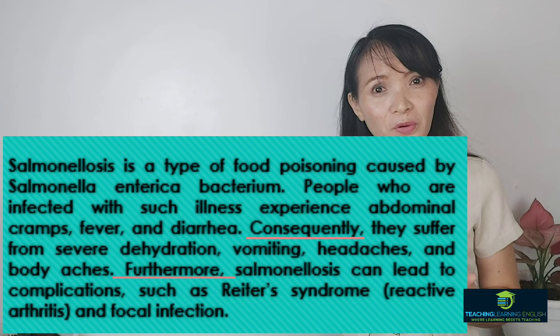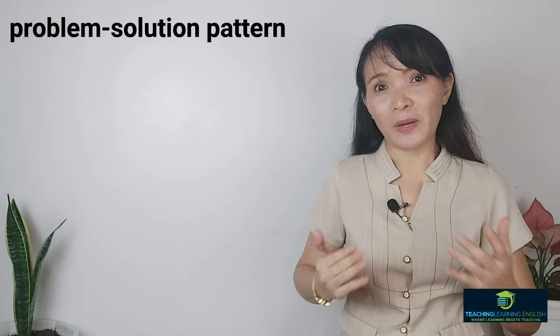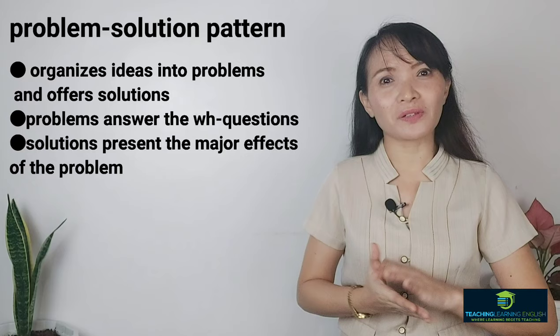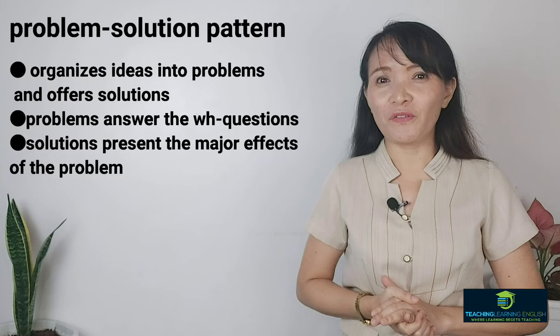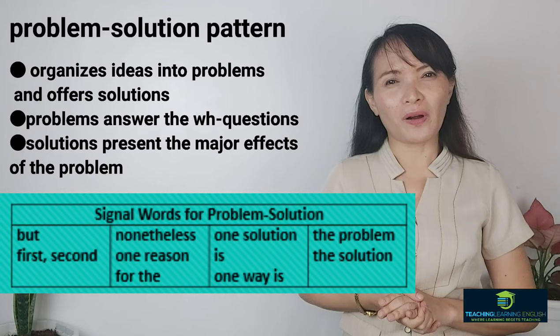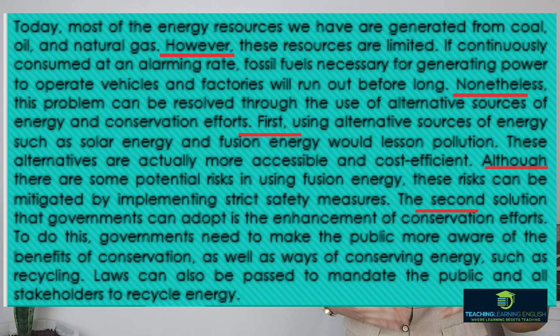The seventh pattern is problem-solution. There's a famous cliché that in every problem, there's always a solution. This pattern divides information into two main sections: one that describes a problem and one that describes a solution. The problem section usually includes the who, what, where, why, and how of the problem. The other part presents the major effects of the problem and the possible solutions. This pattern typically requires more paragraphs because you need to write the details of both the problem and the solution. Signal words found in example paragraphs include: however, nonetheless, first, second, and 'to do this.'